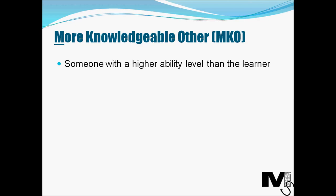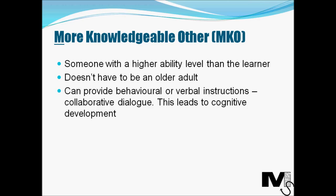A More Knowledgeable Other is somebody with a higher mental ability level than the learner, who can impart knowledge and lead to cognitive development in a child or infant. Importantly, this doesn't have to be an older adult — it can also be another child, even a slightly older one. For instance, if the knowledge relates to video games, an older child can be a better MKO than an adult. An MKO can provide behavioral or verbal instructions to the child, which leads to collaborative dialogue and cognitive development.